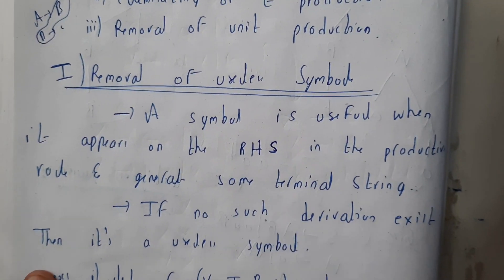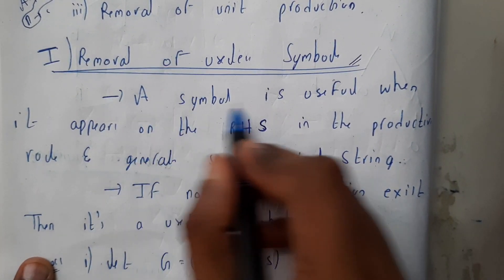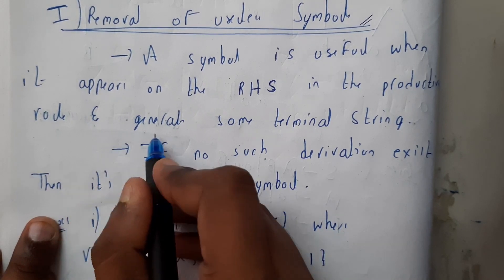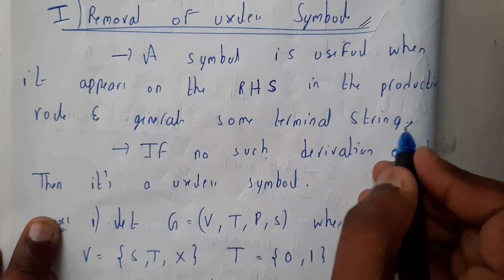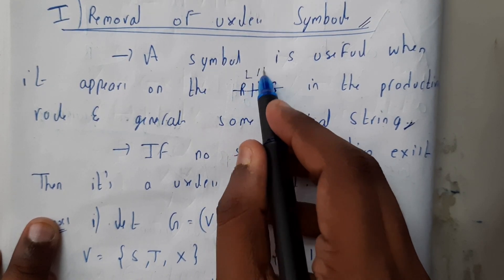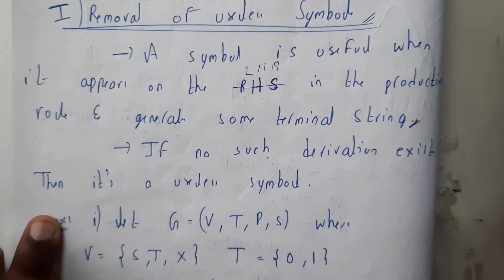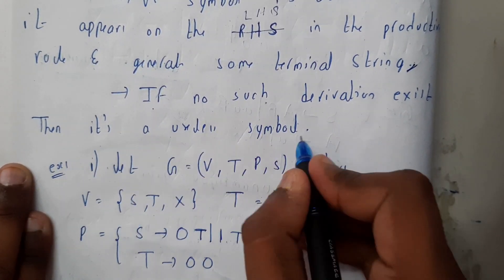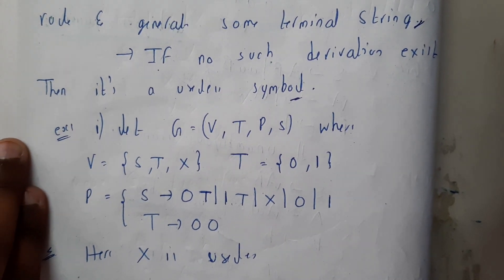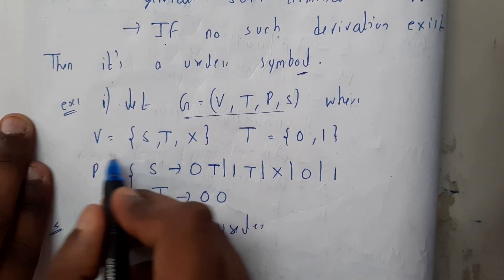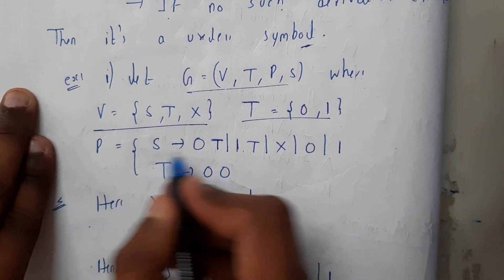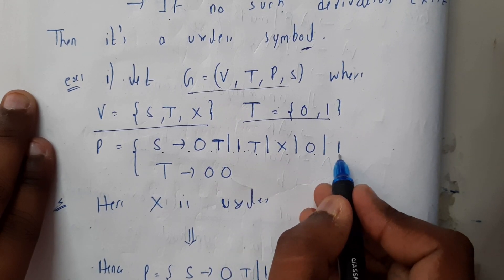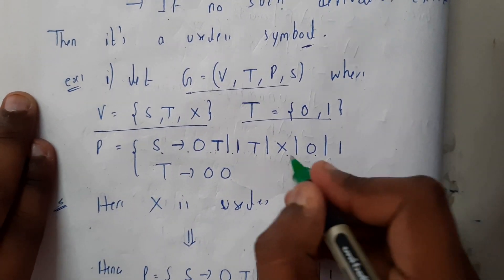Removal of useless symbols: a symbol is useful when it appears on the left-hand side in the production rule and generates some terminal. If no such derivation exists, then it is a useless symbol. In the example we have V = {S, T, X}, T = {0, 1}, and production rules: S tends to 0T | 1T | X | 0 | 1. If you clearly observe, what is the use of X?